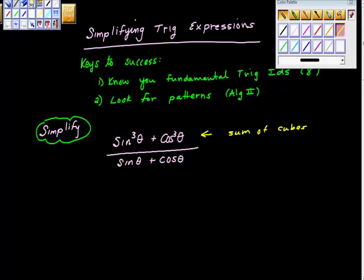If you don't remember, let me remind you that a cubed plus b cubed is actually equal to a plus b times a squared minus ab plus b squared. So that's what I'm going to do here.